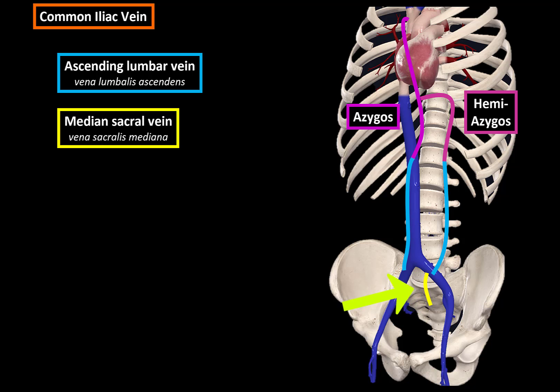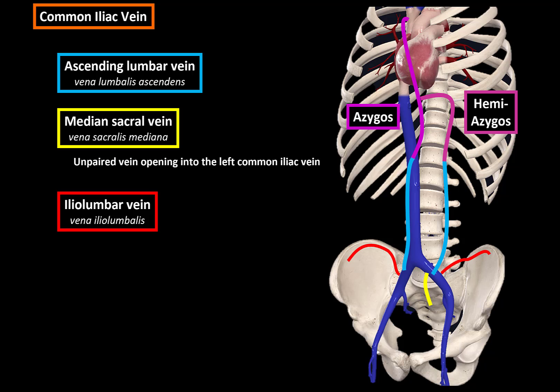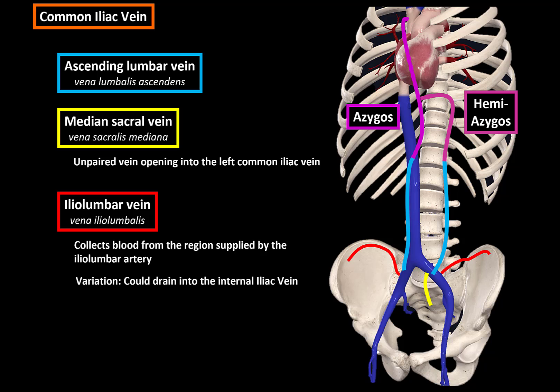Then we get the median sacral vein. This is an unpaired vein which opens into the left common iliac vein. Then we get the iliolumbar veins, which collect blood from the regions supplied by the iliolumbar artery. A known variation of this vein is that sometimes the iliolumbar vein opens into the internal iliac vein instead of the common iliac veins.